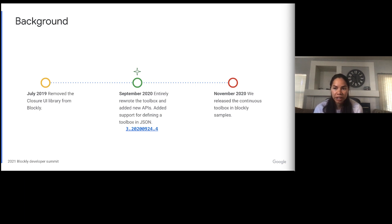In July 2019, we removed the Closure UI library from Blockly. The toolbox still used some of the components from that library, so we ended up copying those components directly into Blockly core. This is one of the reasons we decided to rewrite the toolbox. In Q2 of 2020, we started rewriting the toolbox, and in Q3 we released the rewritten toolbox and support for defining the toolbox in JSON. Most of this talk is going to be focused on the APIs that came out in that September 2020 release of Blockly.